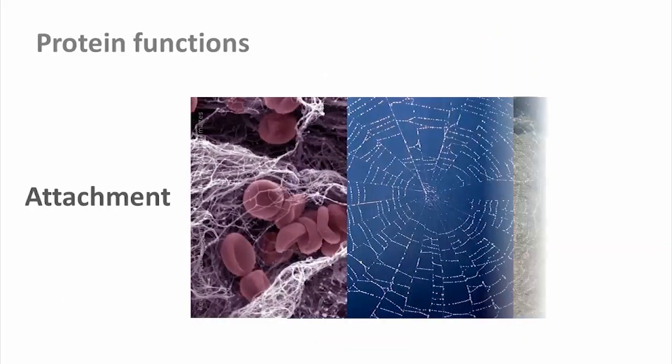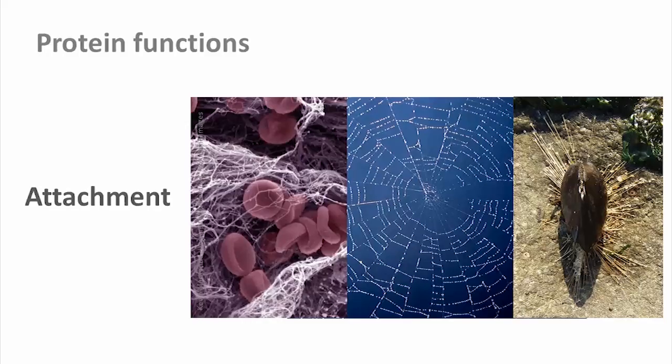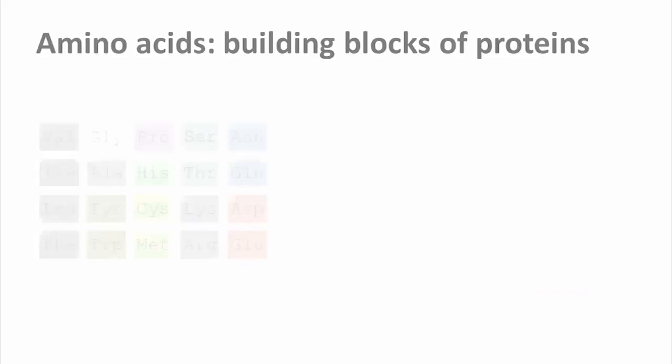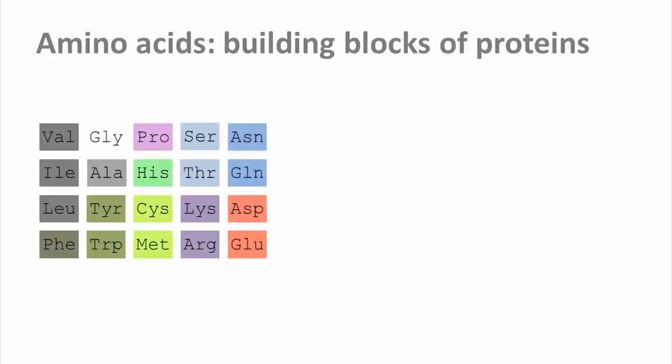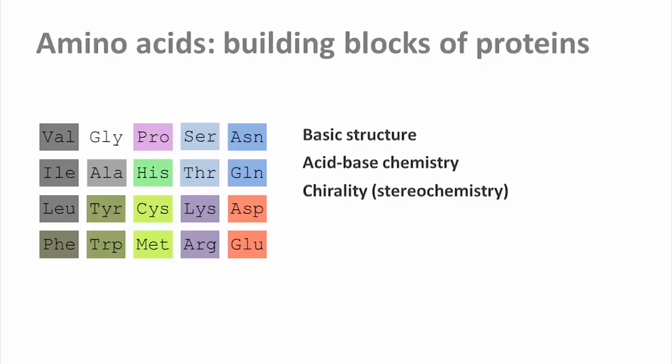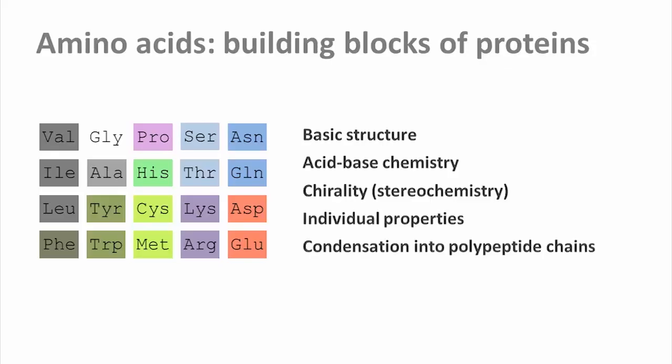Finally, some of Mother Nature's finest glues are proteins, including fibrinogen in blood clotting, spider silk, and mussel byssus. To perform all those incredibly varied functions, we need a sufficiently large repertoire of building blocks. Proteins are synthesized from 20 different amino acids. We're going to look at a number of their properties: the basic structure, the chirality or stereochemistry, the acid-base chemistry, and individual properties of each amino acid. We're then going to look at how these amino acids are joined up into polypeptide chains.